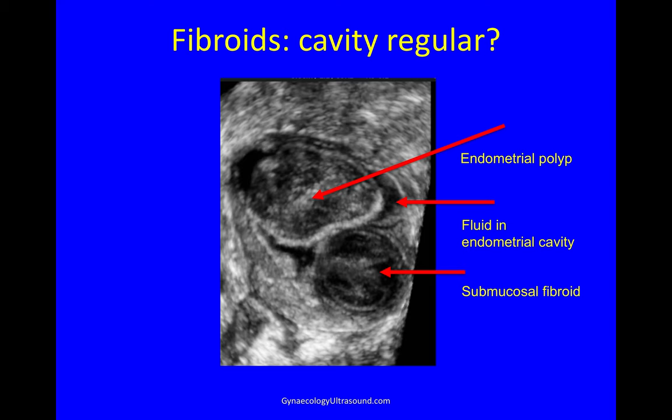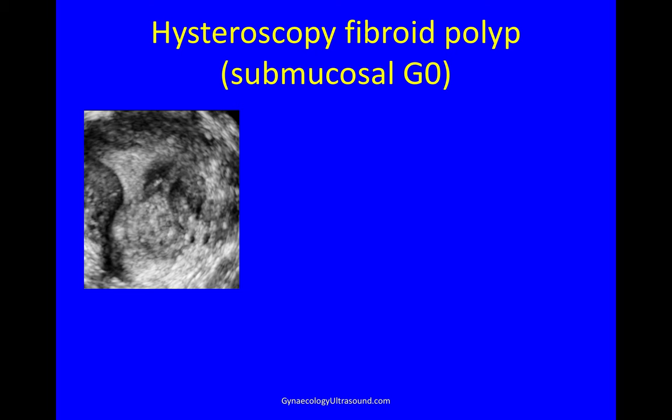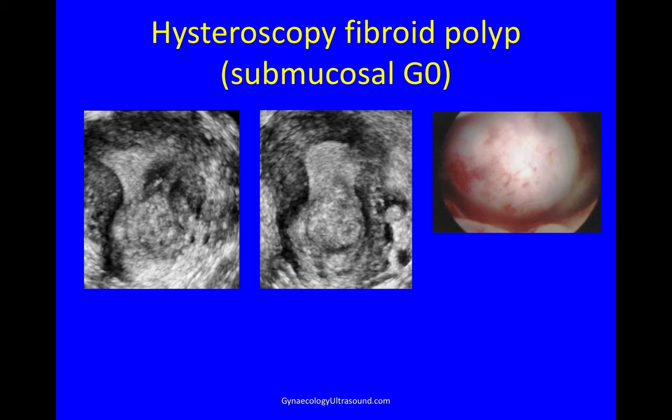Once you've seen a submucosal fibroid polyp you can see it nicely on 3D, and this is what it looks like at hysteroscopy. When they pass a hysteroscope up into the endometrial cavity you would then be able to see this lesion directly.